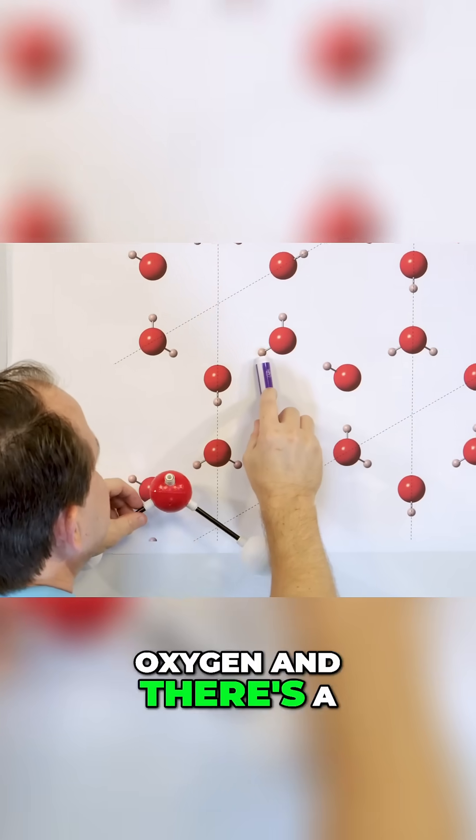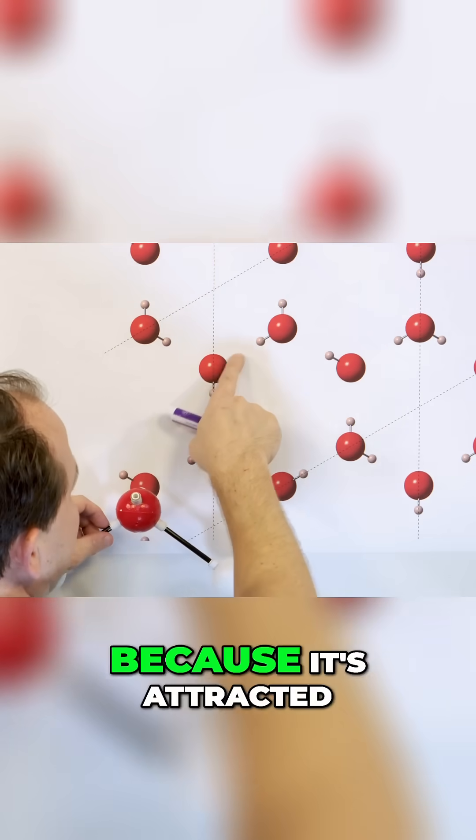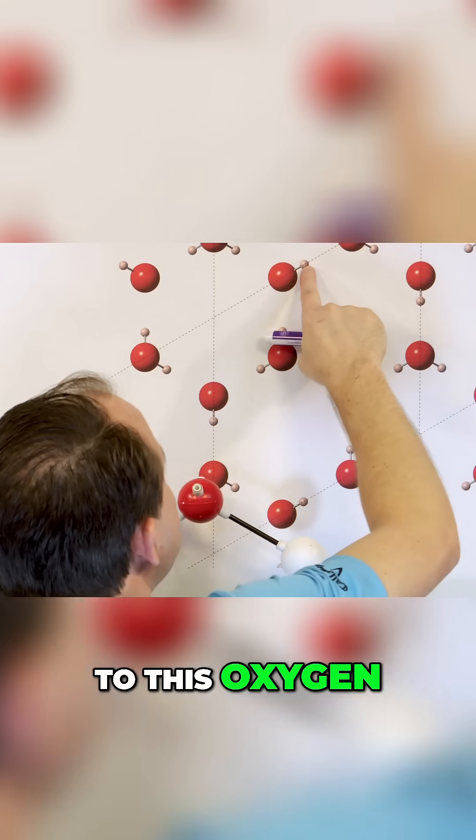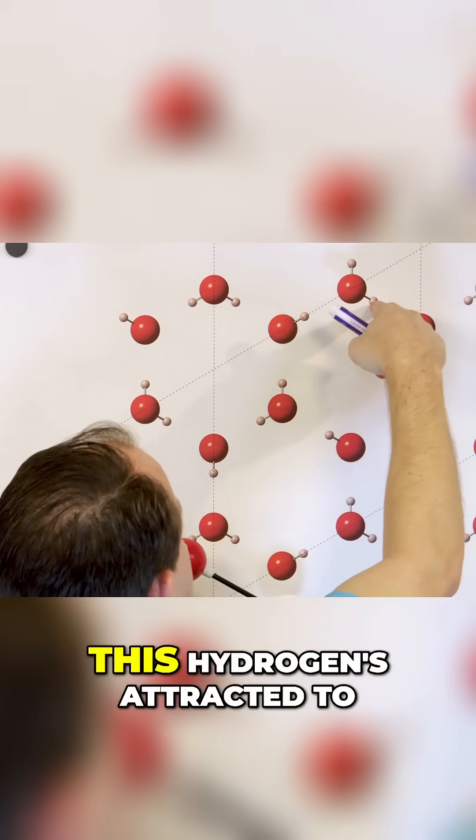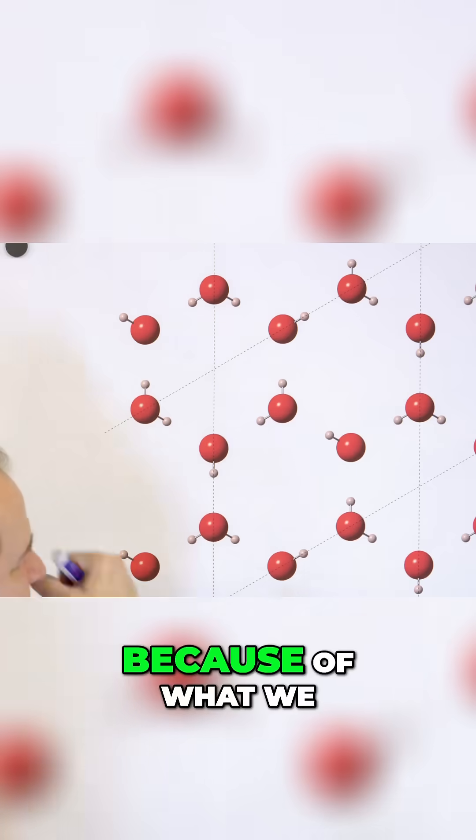Here you have this oxygen, and there's a hydrogen here, but the hydrogen is pretty close to the next oxygen over because it's attracted. This hydrogen is attracted to this oxygen, this hydrogen is attracted to this one, this hydrogen is attracted to this one, and so on. They're attracted because of what we talked about.